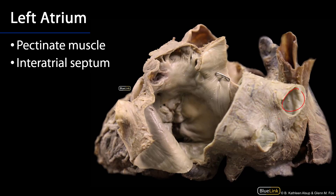Looking at a posterior view of the heart where the base has been incised and the wall of the left atrium reflected away, we can see two pulmonary veins on each side — four pulmonary veins in total. We get a very good view of the atrioventricular valve separating the left atrium from the left ventricle, called the bicuspid or mitral valve. The left atrium shows pectinate muscle within the auricle wall, but has a smooth-walled appearance posteriorly, much like the right atrium.